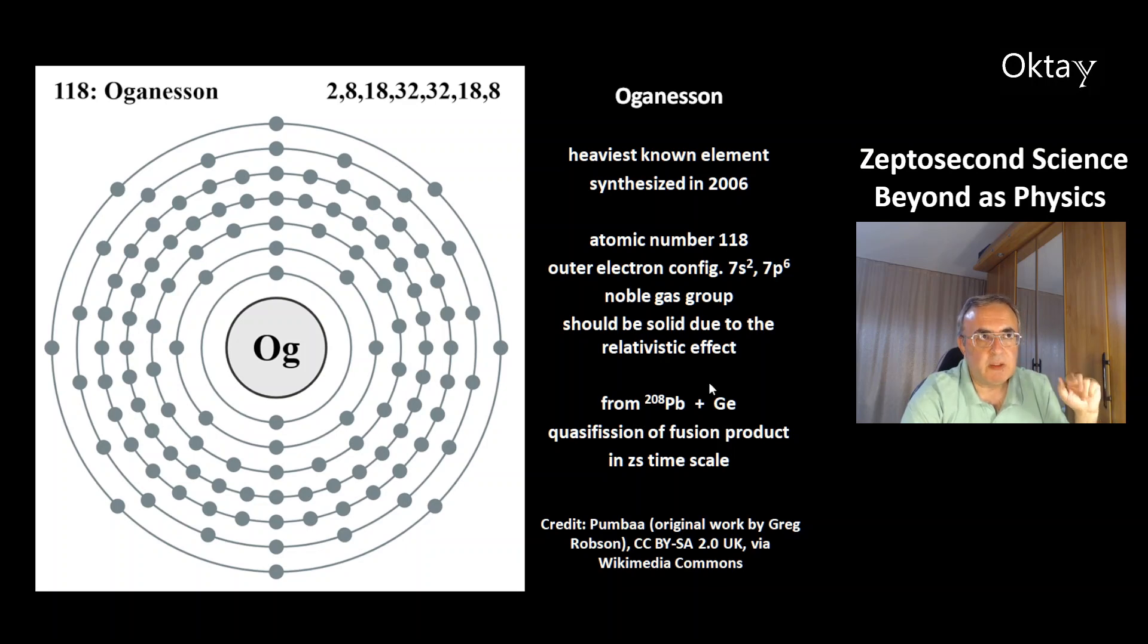This is one way to make oganesson from lead-208 and germanium crystal. There is a quasi fission of the fusion product. It happens in a zeptosecond time scale.